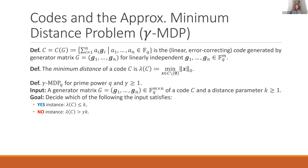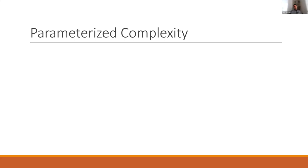Then we have the fundamental problem — the minimum distance problem (MDP) on codes — which is the analog of SVP. Here we're given a generator matrix of a code and a distance parameter as input, and the goal is to decide whether the minimum distance is at most k or at least gamma·k.